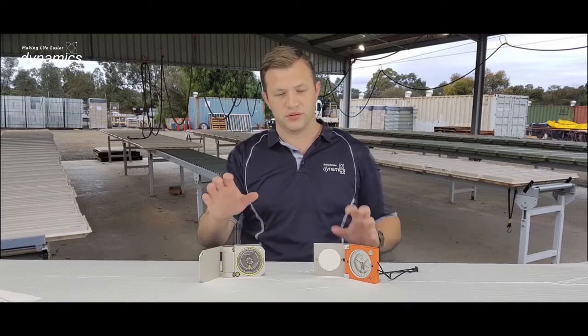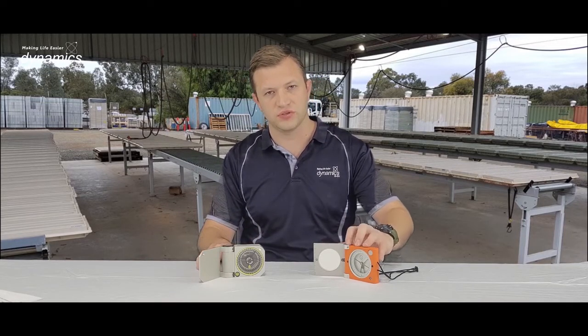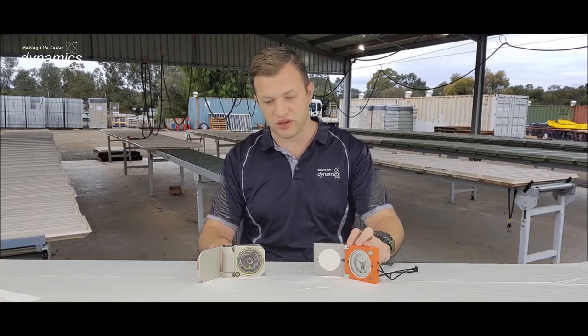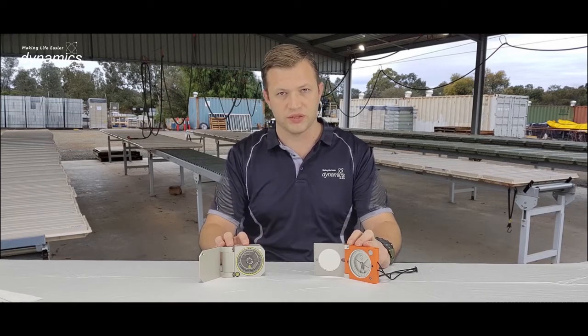So here we've got two different compasses. You've got a traditional compass, in this case it's a Freiburg, and the Brunton which we're talking about today.